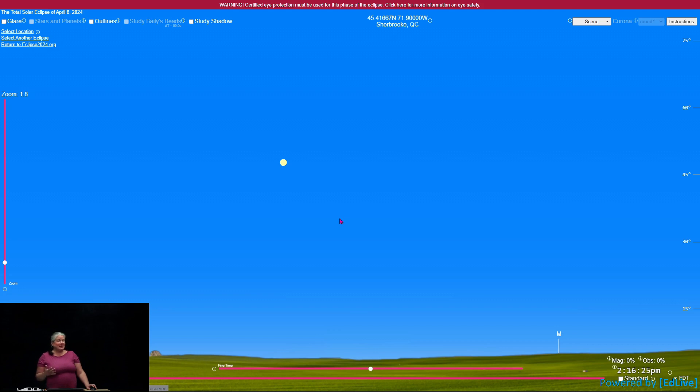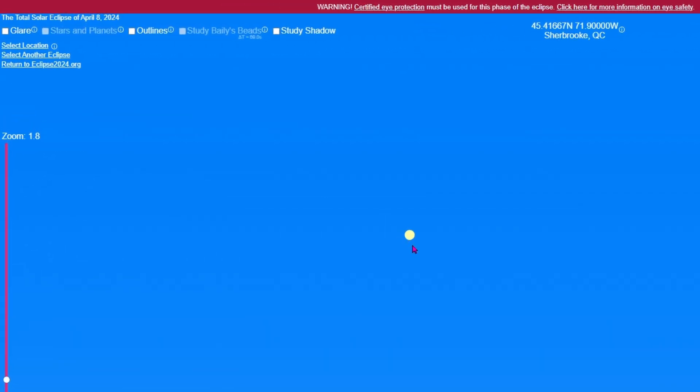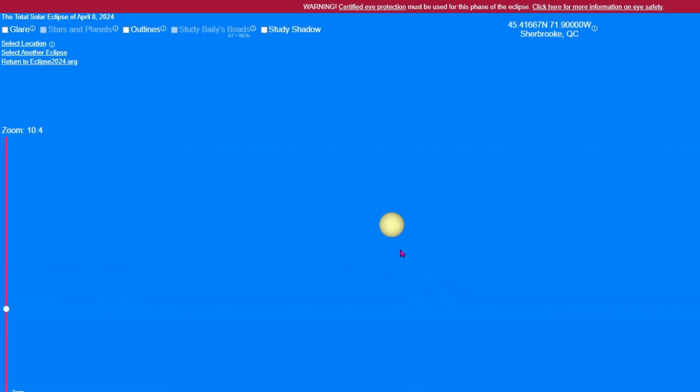To understand what you'll see during the eclipse, I will use a simulator on the screen here. So what we see is the view from Sherbrooke, which is a city in the region of total eclipse. And we see the Sun in the sky. We don't see it, but the Moon is right here, ready to pass in front of the Sun.